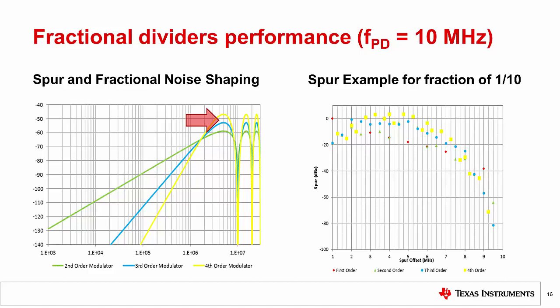If we look at the plot here on the right, we see that the first fractional spur at 1 MHz is much lower using the third order modulator than the first order modulator. In fact, it's about 20 dB better. In the case that the fraction was smaller, like 1 over 100 or 1 over 1000, this theoretical benefit would be much more pronounced.